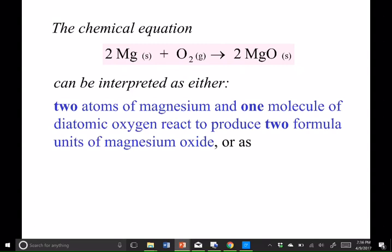So I usually say that that's two magnesium atoms combining with one oxygen molecule, O2 molecule, to form two formula units of magnesium oxide. But we could also scale up those coefficients of two, one, and two.